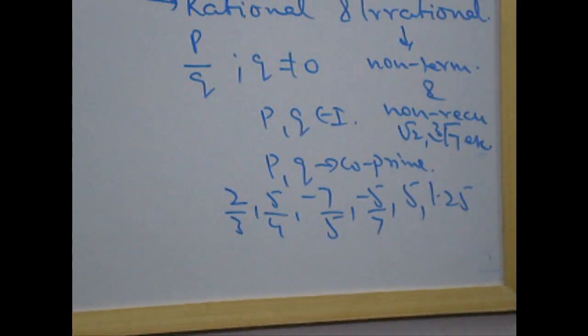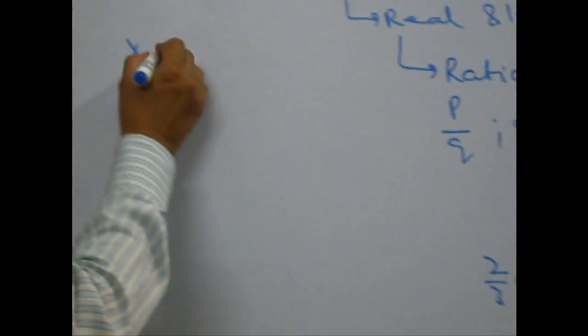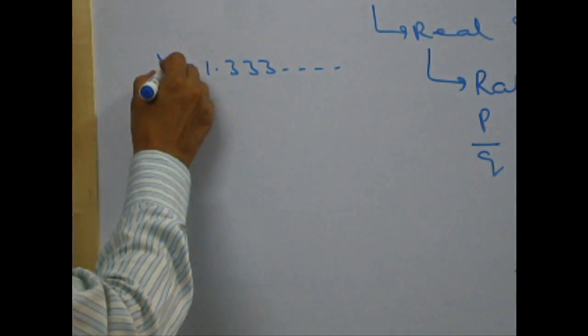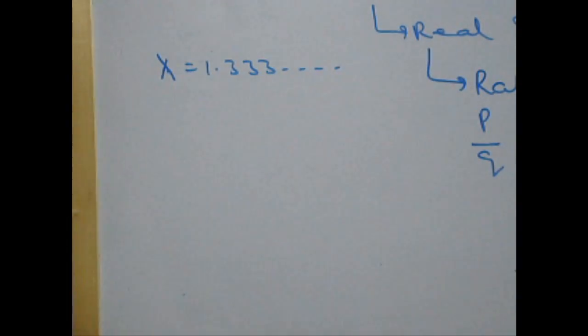Let's take a question. Say, x is 1.333 and so on. So, first question is x rational or not? No doubt. x is rational, why?